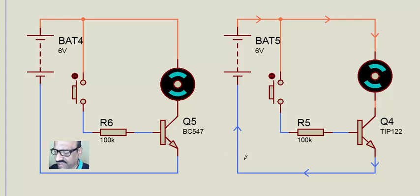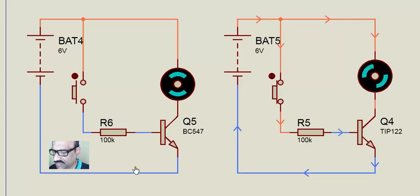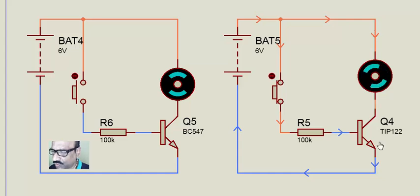However, if we take a different transistor — a Darlington pair called TIP122 — and operate this with the same 100K resistor, we find that the motor rotates. The difference is that this transistor requires very little current for the collector-to-emitter current to flow. This is the basic difference between a standard transistor and a Darlington pair in this circuit.